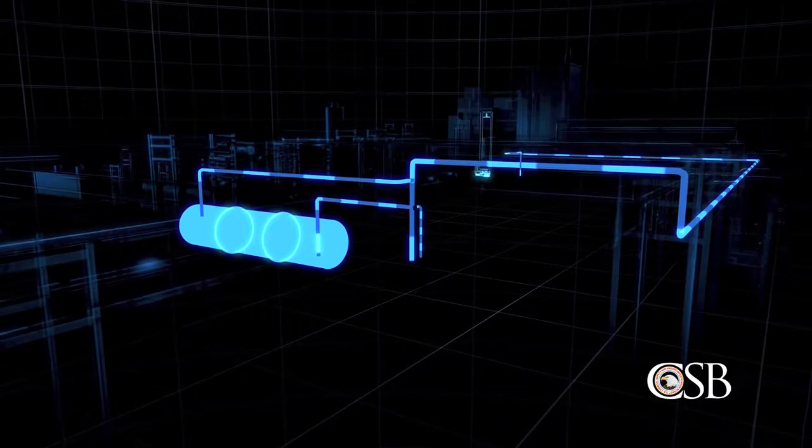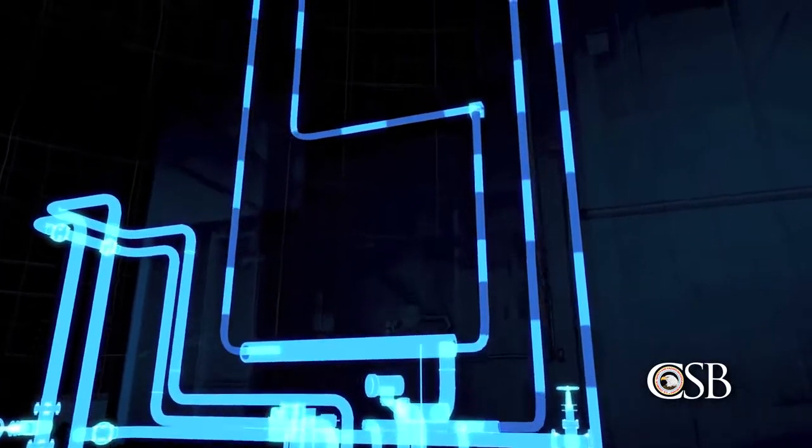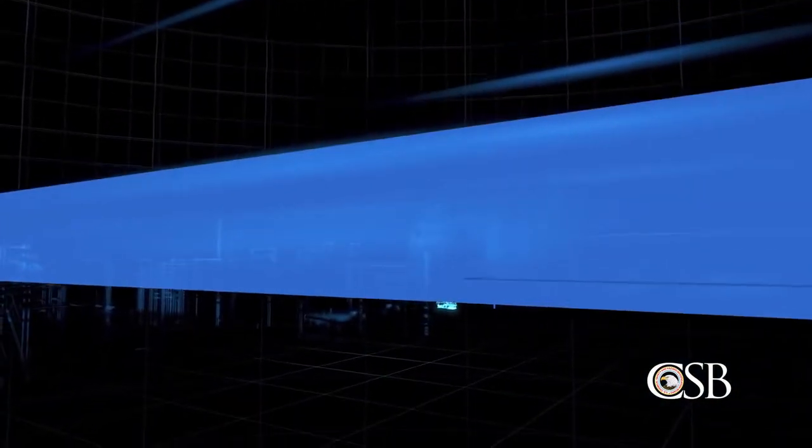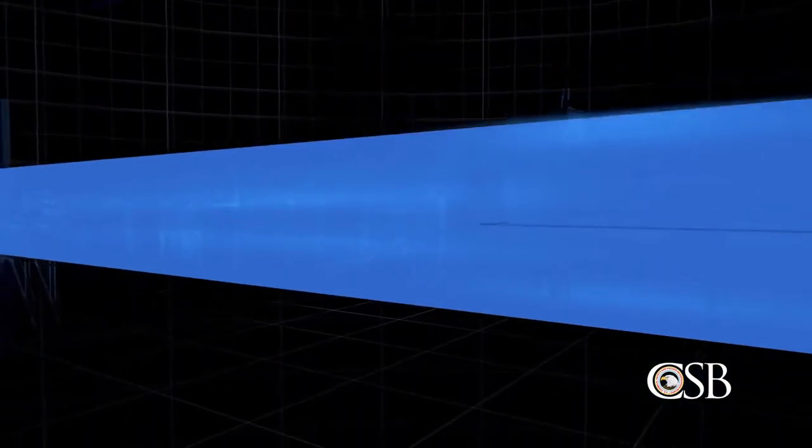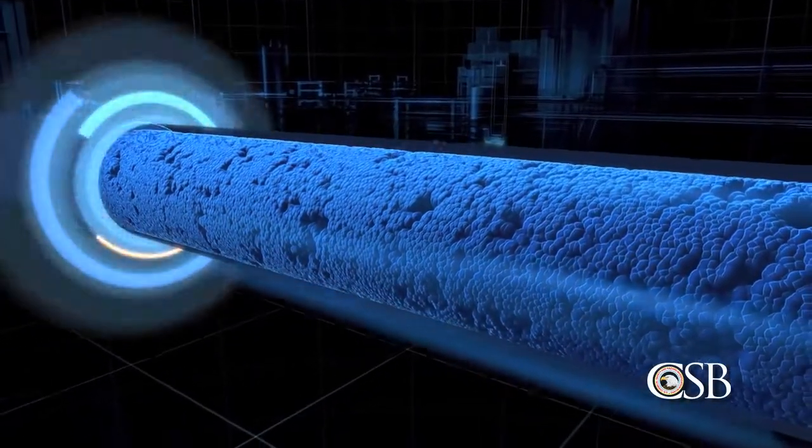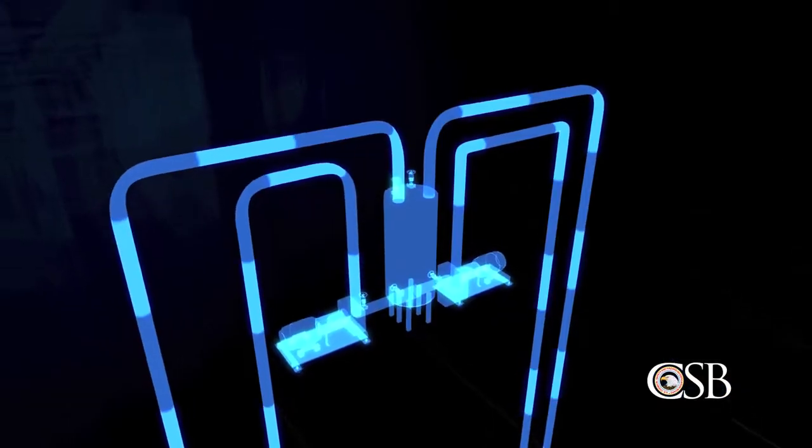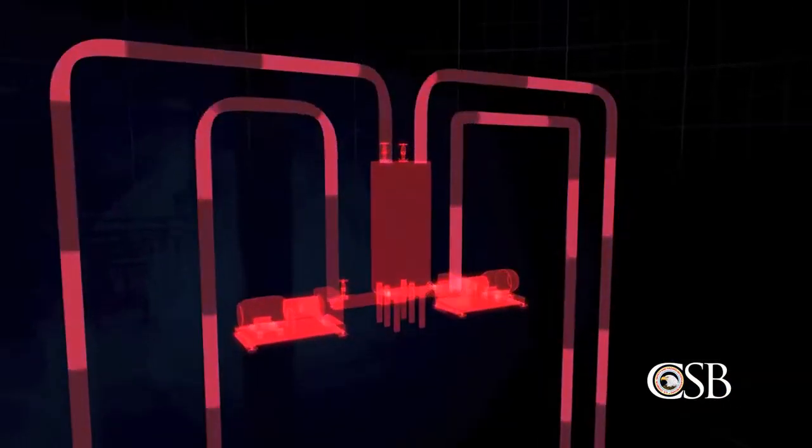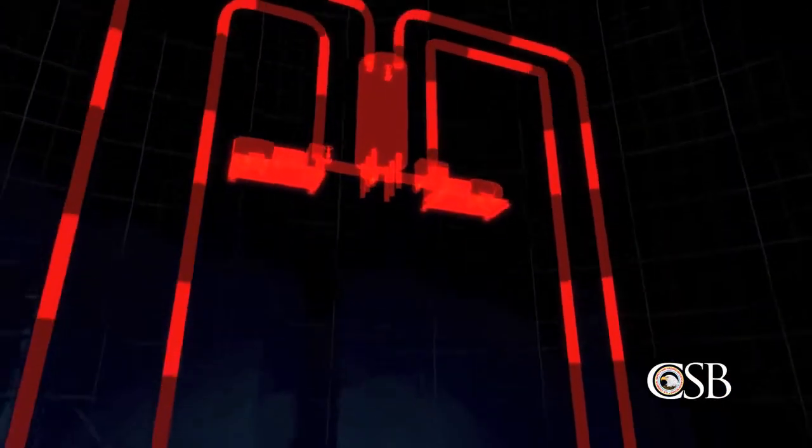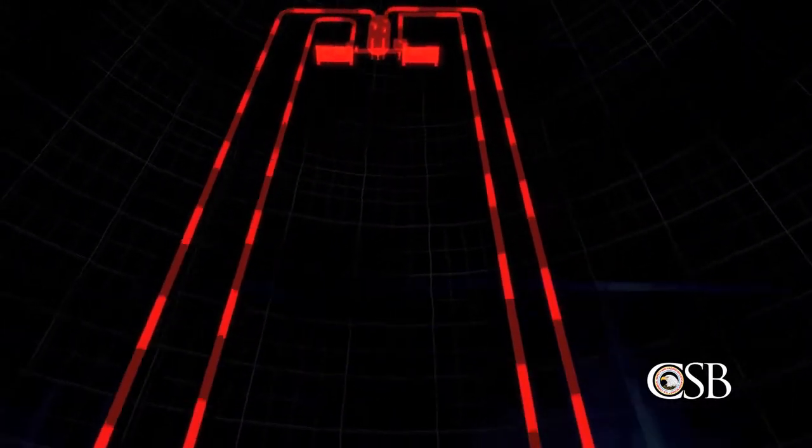However, the startup was unsuccessful because piping within the reaction system was blocked. This blockage was common following a shutdown and was caused by a slurry that formed in the pipes from a reaction between methyl mercaptan and other chemicals. To clear the slurry, operators flushed hot water through the blocked piping. By noon on Thursday, November 13, operators determined that the initial blockage was cleared.